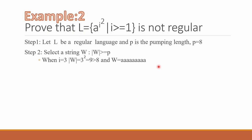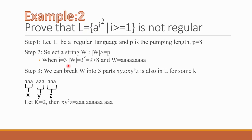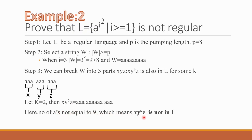Our string is a^9, which is 9 a's. We break it into x, y, z — for example, three a's each. For k equal to 2, we pump y, getting 6 a's for y² repeated. The total becomes 3 + 6 + 3 = 12 a's. But our language requires the number of a's to be a perfect square. 12 is not a perfect square, so xy^k z is not in L. This contradicts our assumption, so the language is not a regular language.